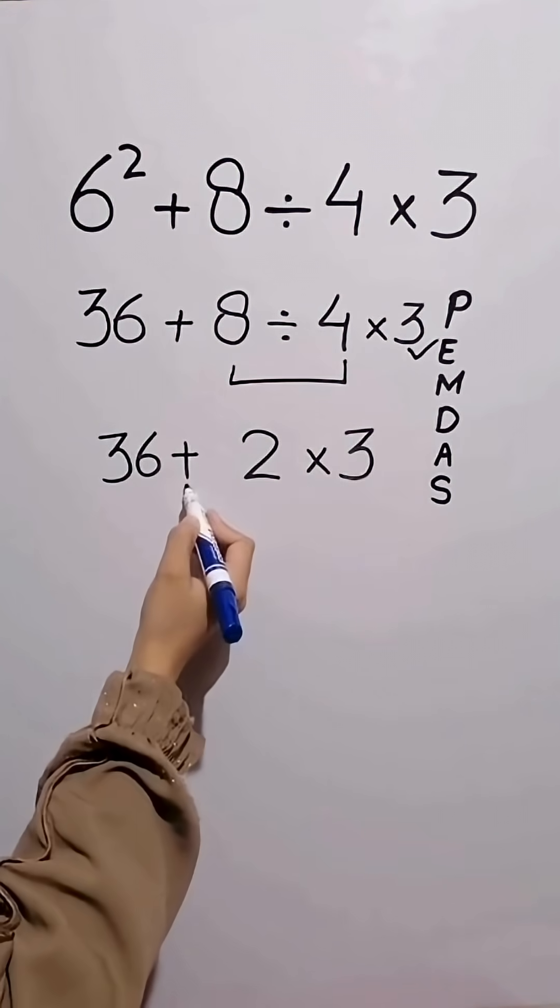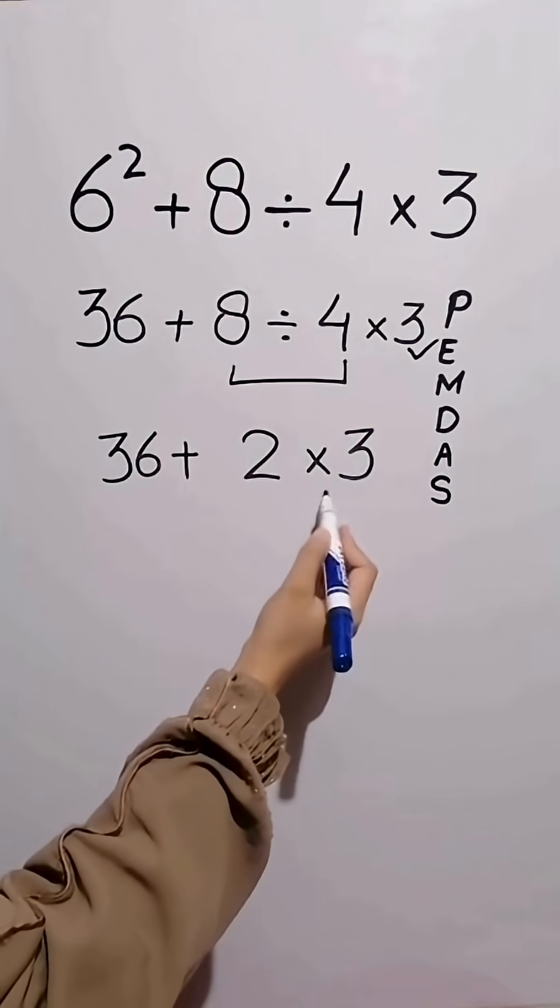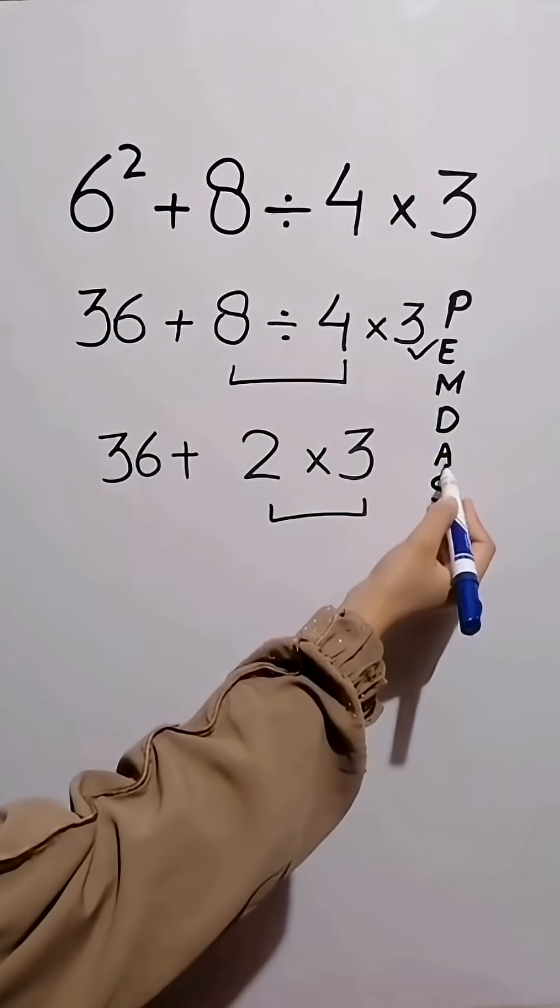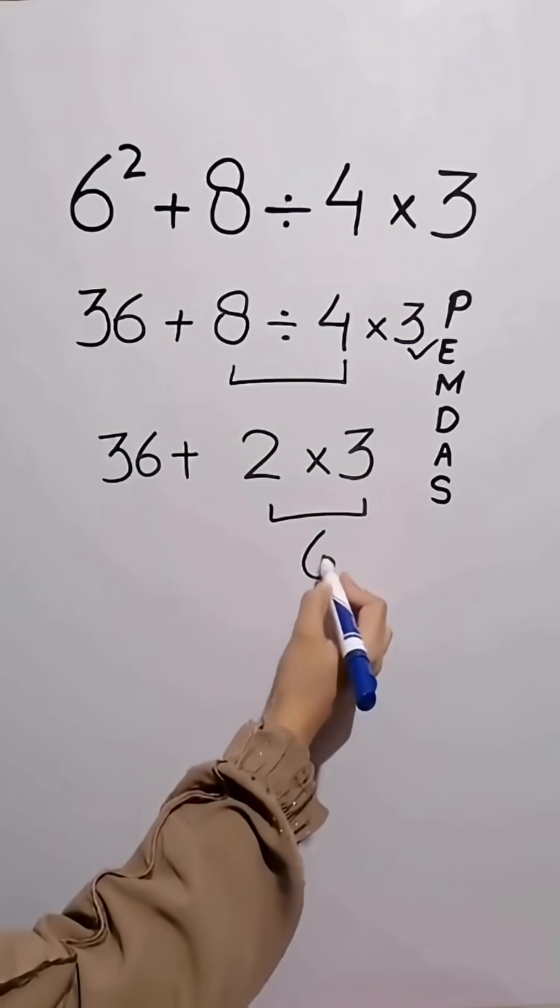In this step, there is one addition and multiplication. We do the multiplication because multiplication comes before addition. Now we multiply 2 times 3 which gives us 6.